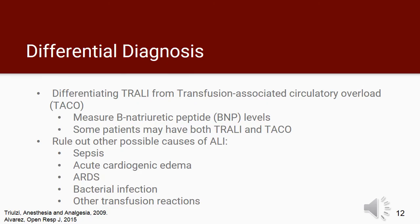For a proper diagnosis of TRALI, it is important to conduct a differential diagnosis. In order to differentiate transfusion-associated circulatory overload, or TACO, from TRALI, BNP levels may help. TACO is suggested by an absolute BNP level more than 100, and a post-transfusion to pre-transfusion ratio more than 1.5. Oftentimes, it is difficult to separate TRALI from TACO, and in many instances patients have both present at the same time. Clinicians must also rule out other causes, such as sepsis, acute cardiogenic edema, ARDS, bacterial infection, and other transfusion-related reactions.